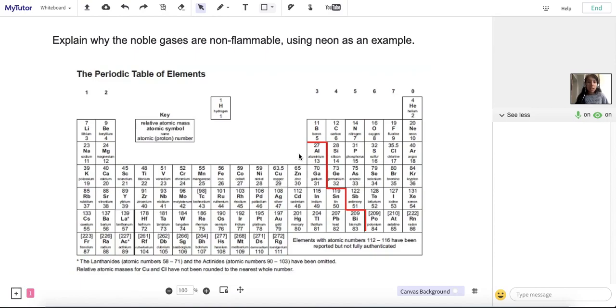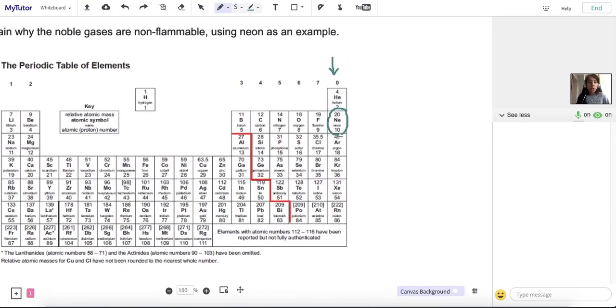If we look at neon, it's in the noble gases, so it's in group 0 or group 8 sometimes. So here's group 0. We can see that neon has an atomic number of 10. So let's draw the electron configuration of neon.